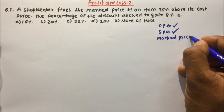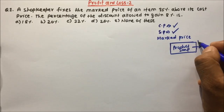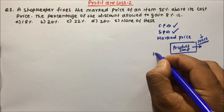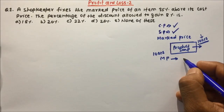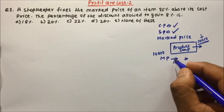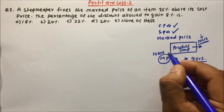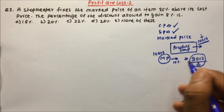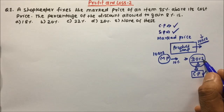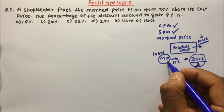Marked price is the price which is marked on the product. When you go to the mall and see a product, let's say a soap, whatever price is marked on that soap — suppose it is 100 rupees — that becomes the marked price. If there is a discount of 10 percent on republic day or independence day, then 10 percent of 100 is 10 rupees, and 100 minus 10 is 90 rupees. So you get the soap for 90 rupees instead of the marked price of 100 rupees.